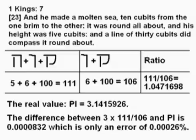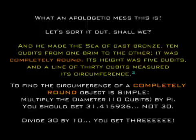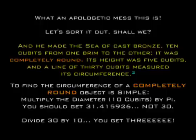Based on assumptions as well. Now, as for pi in the Bible, I'm not going to go into the details — you can see the math on the screen. There's just one problem: it's a mess. Let's sort it out, shall we? 'And he made the sea cast of bronze ten cubits from one brim to the other. It was completely round. Its height was 5 cubits and a line of 30 cubits measured its circumference.' To find the circumference of a completely round object is simple: multiply the diameter of 10 cubits by pi. You should get 31.415926 etc. Not 30. 30 divided by 10 is 3.